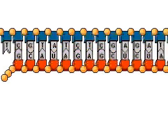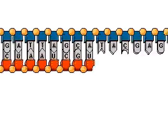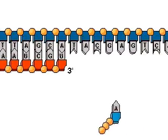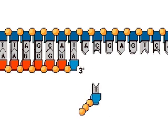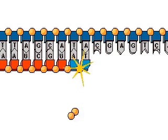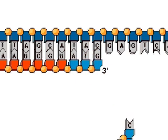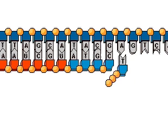When the RNA primer is about 30 nucleotides long, a deoxyribonucleotide is added to the three prime end of the RNA primer. The enzyme DNA polymerase adds deoxyribonucleotides to the growing chain. Base pairing rules continue to be followed.